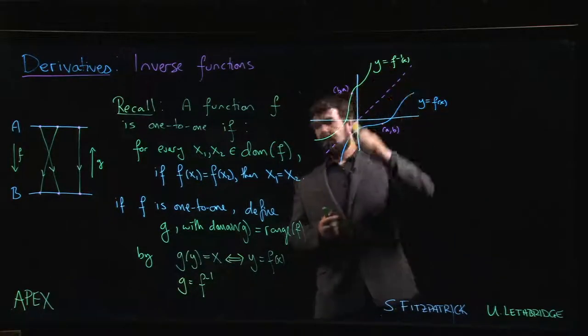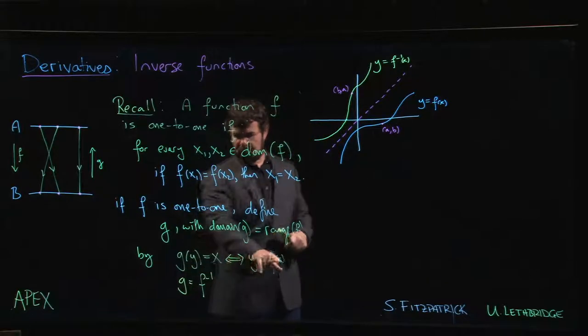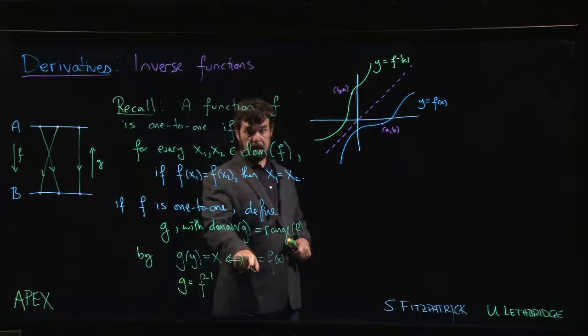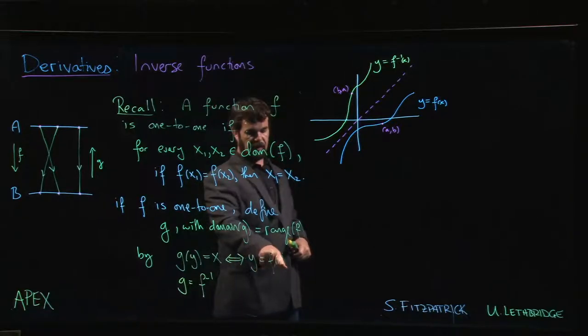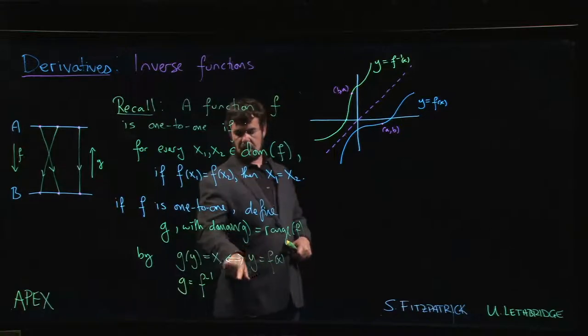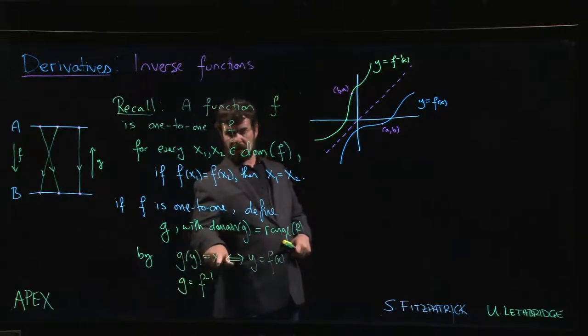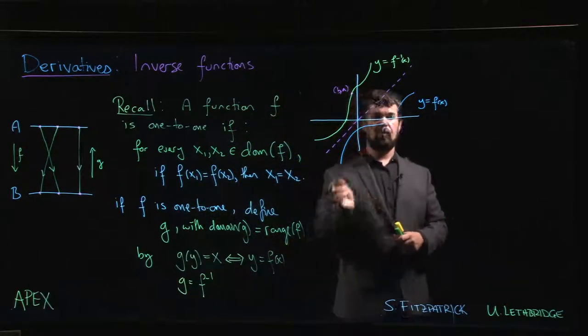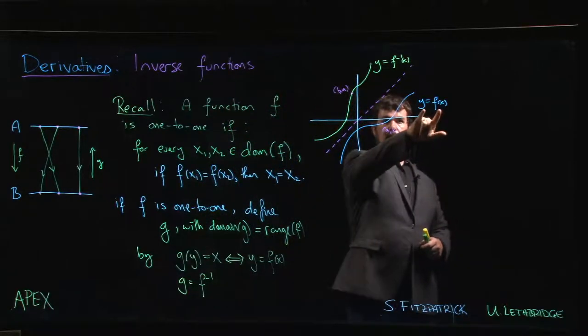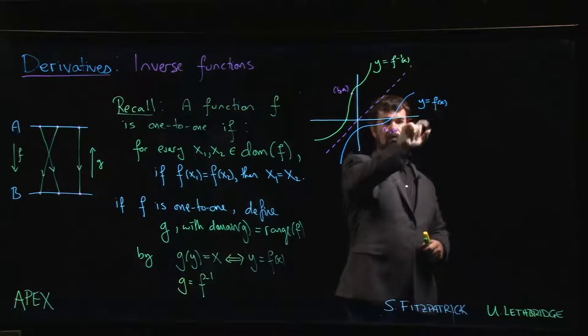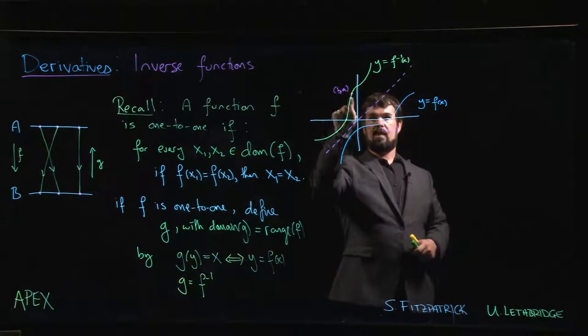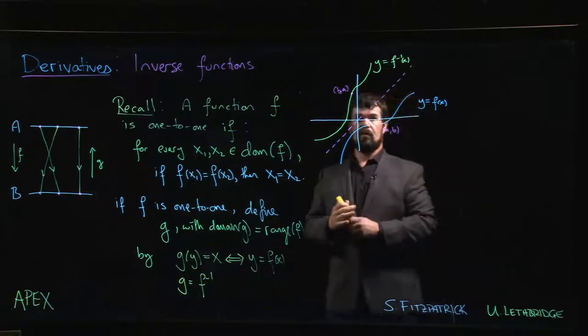Now, when you define the inverse, what this is more or less telling us here is that if x, y is a point on the graph of f, if y equals f of x, then y, x is a point on the graph of the inverse. So if this is some point a, b on the graph y equals f of x, so that f of a equals b, then f inverse of b equals a. So b, a would be a point on the graph of the inverse.